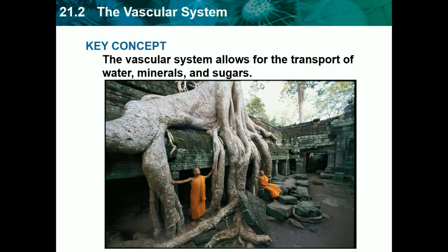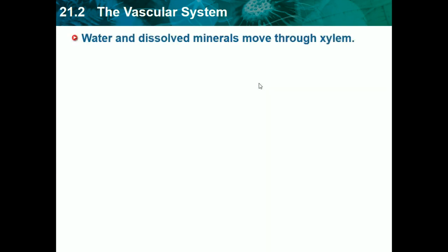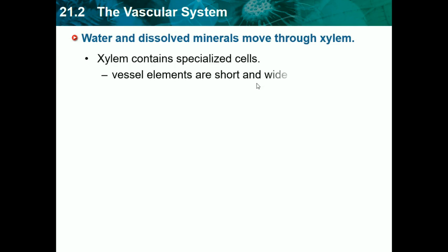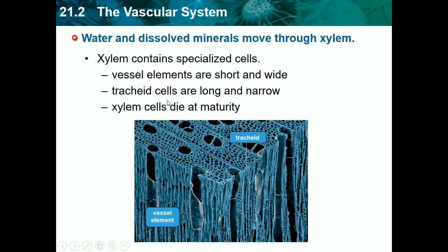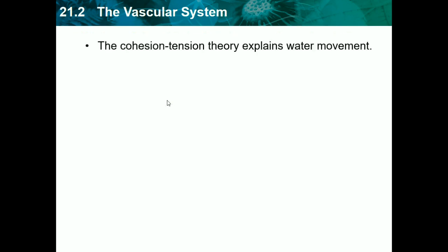Section 21.2 is the vascular system. The key concept is that the vascular system allows for the transportation of water, minerals, and sugar. Water and dissolved minerals move through the xylem. Xylem contains specialized cells: vessel elements, which are short and wide, and tracheids, which are long and narrow. Xylem cells die at maturity. This isn't that important to memorize — it's just showing different types of cells in the xylem.